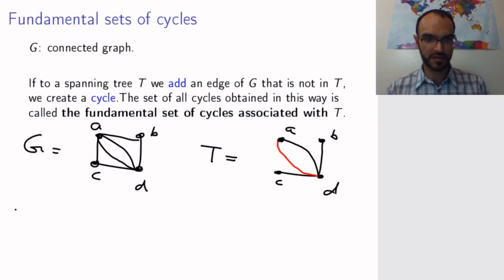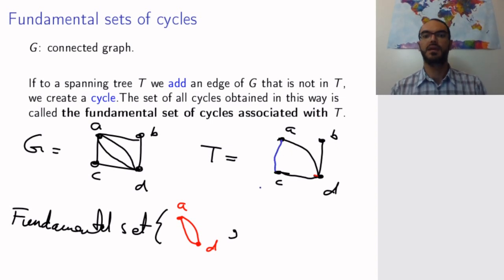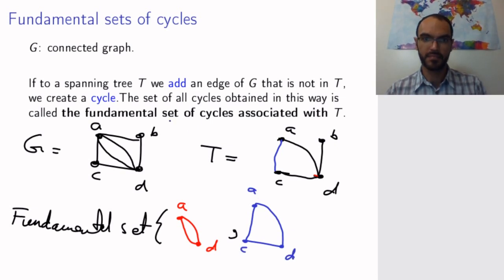Let's collect all our cycles in this fundamental set. So, by adding the red edge, I get this cycle that consists of the double edges between A and D. Now, what else can I do? Let's erase this red edge. Instead, I can add this edge that's missing. And then I get a cycle A, C, D. Very nice.